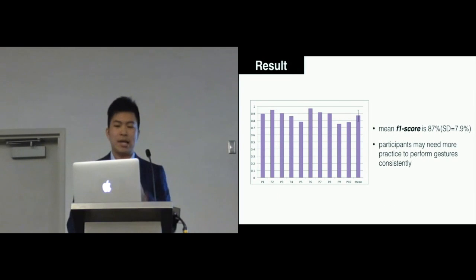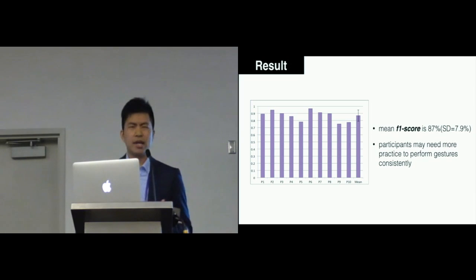The result is shown here. This graph shows the performance across our 10 participants. We used the F1 score for measurement, and the mean F1 score across all the participants is 87%. We noticed that the performance of participants 5, 9, and 10 is lower than the others because these participants performed certain gestures differently in the two sessions. This indicates that participants may need more practice before they can perform gestures consistently.